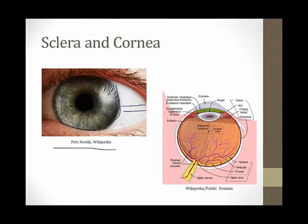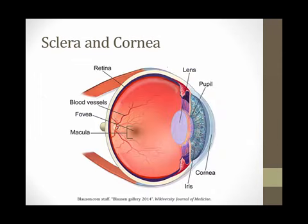The white part of the eye goes right up to the edge of the iris and then the cornea covers the iris and the pupil. This is easier to appreciate in the cross-sectional drawing on the right side of the screen. This white part that I'm drawing a line through is the sclera — it wraps around the entire eyeball. At the front of the eye, the sclera stops and the cornea begins, covering the iris and the pupil. Here's another picture to make this even more clear: the white sclera wraps around the eyeball, ends at the edge of the iris, and then the cornea begins, covering the iris and the pupil.